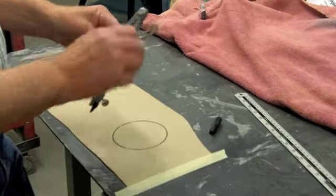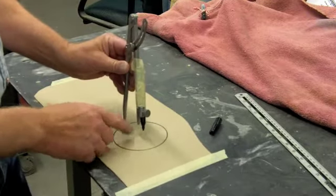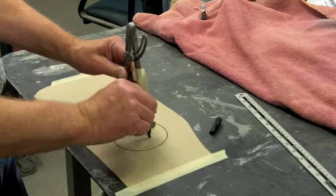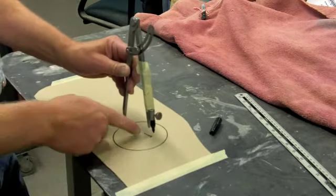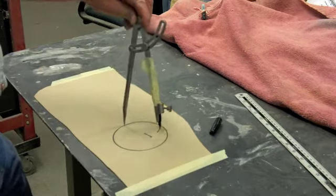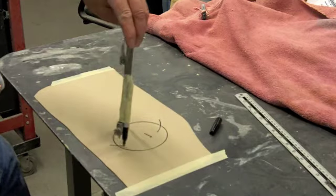So we just take the compass, we put it on the outside edge, and then adjust it so it's anywhere past the center. It has no relevance as to where it is, as long as it's past the center. Lock it in place, and then we go ahead, we put an arc here and an arc over here.